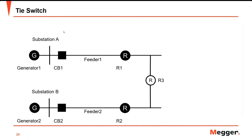Tie switch: another advantage of line reclosers is that some of them have voltage transformers on both sides that can be used to check synchronism. Suppose circuit breaker one is under preventive maintenance — the recloser can be used to check synchronism between feeder one and feeder two prior to tying the two together.